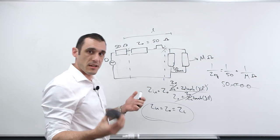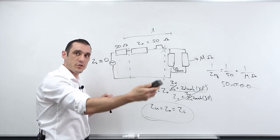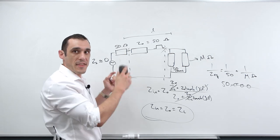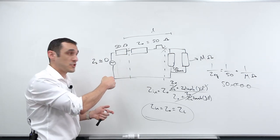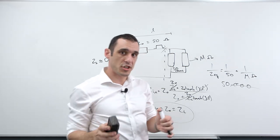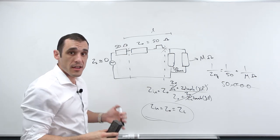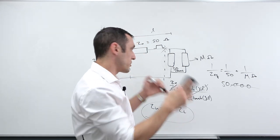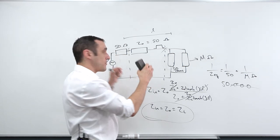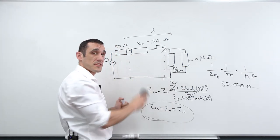Some components use what's called on-die termination, where the termination resistor is already built into the chip and the output impedance at the source is already set to 50 ohms. For example, some Texas Instruments microcontrollers — like on the wireless RF output going to an antenna — already have the output impedance set to 50 ohms, so you don't need to add an external resistor. You just need to check the datasheet and consider the signaling standard and the impedances on-die versus your target transmission line impedance.